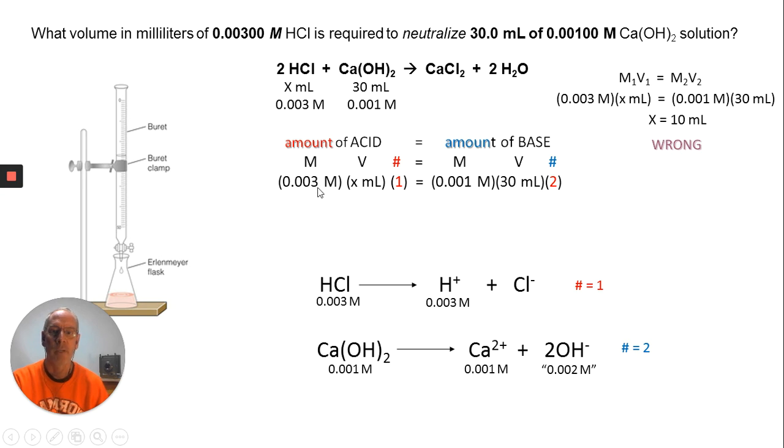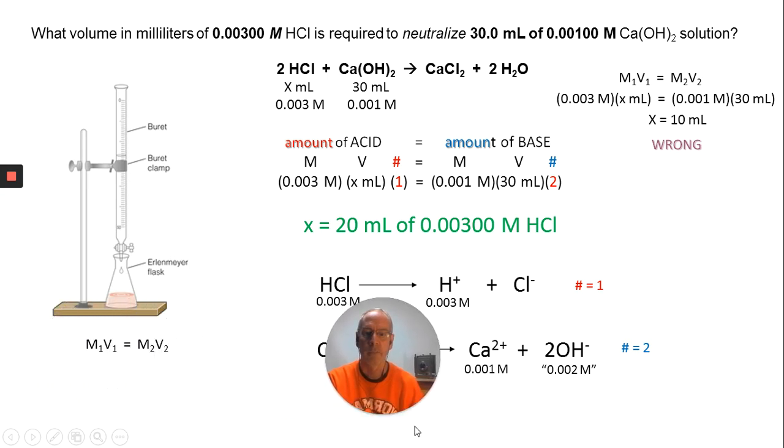Now we can plug into this equation. We have the molarity of the acid 0.003 M, the volume I don't know, and the number is 1 from the way it dissociates. The base is 0.001 M, the volume is 30 mL, and the number here is 2 because it makes two OHs. When you solve that, you get the correct answer, 20 mL of 0.003 M HCl.